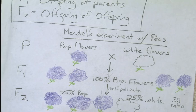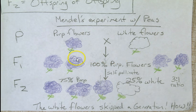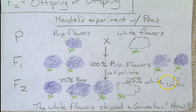Here is a summary of one of Mendel's experiments. He crossed purple flowers with white flowers and got 100% purple flowers in the F1 generation. He then let those self-pollinate — taking pollen from the same plant and giving it to the eggs of the same plant. They produced three-fourths purple (75%) and one-fourth white (25%), a three-to-one ratio, or three purple flowers for every one white flower. The white flowers effectively skipped a generation.